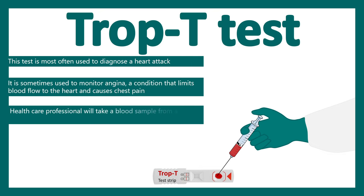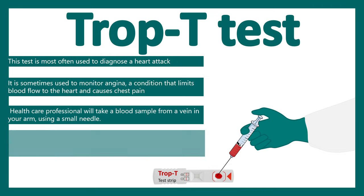In this test, blood is drawn from the vein and a small test strip is used to determine whether the individual is TROP-T positive or negative.